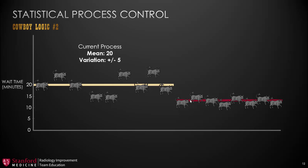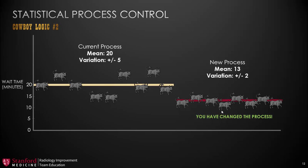Like cowboy logic number two showed, when we have a group of consecutive points above or below the mean, then some change has occurred, and that's when we can create a new mean for the process. In statistical process control, if you have a group of eight or more consecutive points above or below the mean, then you've probably changed your process. So now we can state our new process having a mean of 13 and a variation of plus or minus 2. We've won in two ways: we've decreased our average wait time from 20 to 13, and we've also decreased our variation — giving the patient a more consistent wait time of right around 13 minutes.